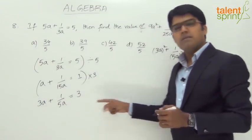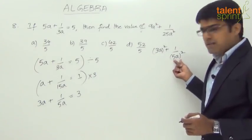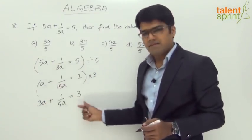So 3a plus 1 by 5a equals to 3. Now that we need 3a square and 1 by 5a square, square on both the sides. Let's see what happens.